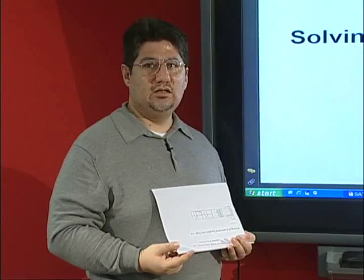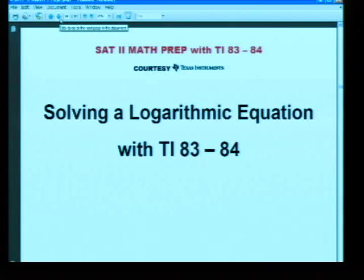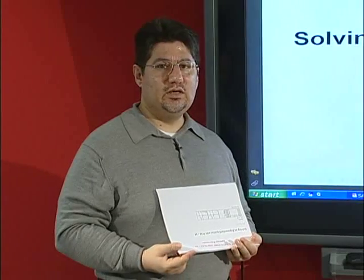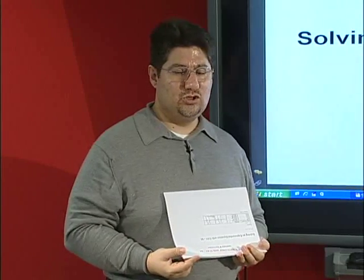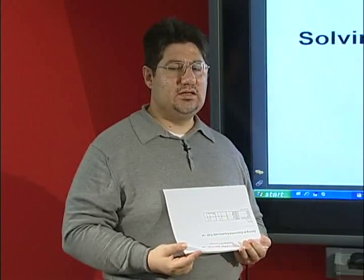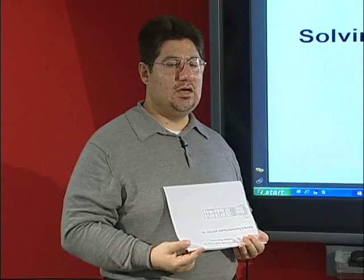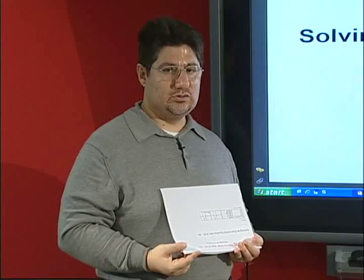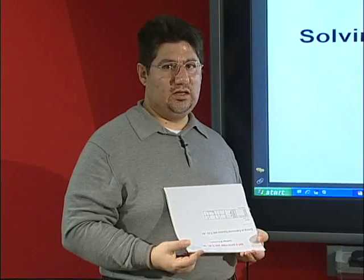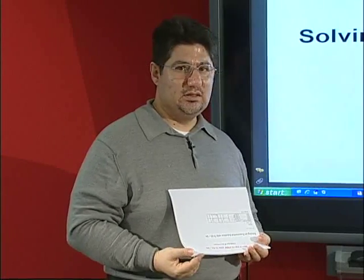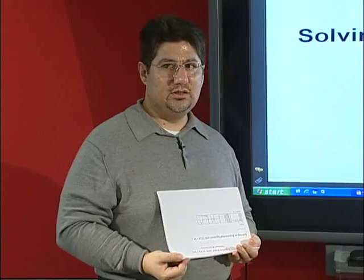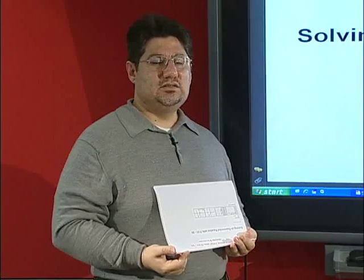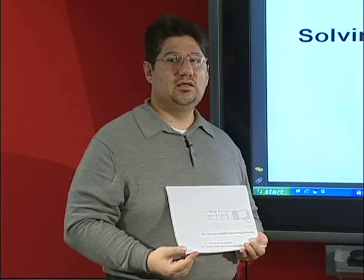Today we will be solving a logarithmic equation with the TI-83/84. We will be given an equation of the form f(x) equals g(x). We will take the right-hand side to the left — f(x) minus g(x) — sketch the graph, and find its zeros. The only thing we have to remember about logarithms is how to input them into the Texas Instruments graphing calculator.